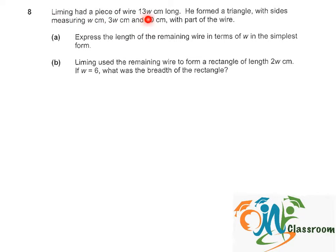Li Ming had a piece of wire 13W cm long. He formed a triangle with sides measuring W cm, 3W cm, and 20 cm with part of the wire.